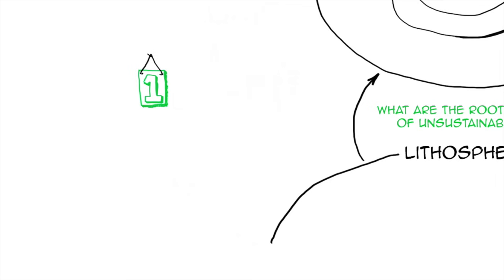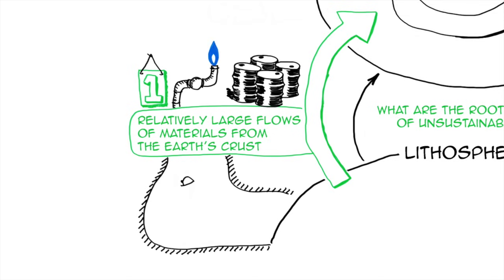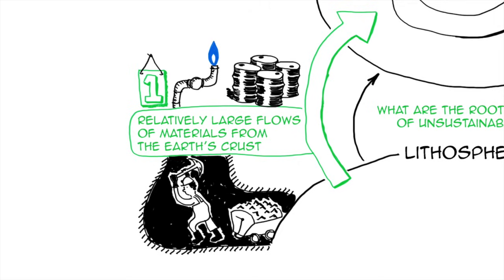The first one is that we extract large flows of materials from the earth's crust, the lithosphere. These materials are things like oil, like natural gas, heavy metals, etc., that are rare in the biosphere and that we extract in such large quantities that they accumulate and nature cannot cope.